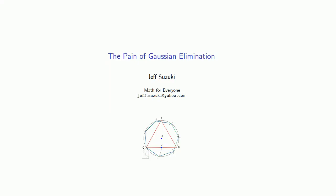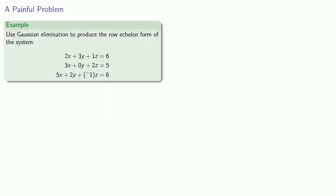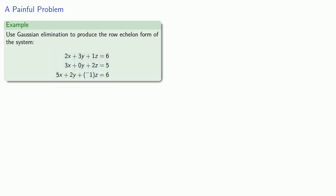One problem with Gaussian elimination is that we almost always encounter fractions. So let's start out with this system of equations, which is already written in standard form, which means we can put down our augmented coefficient matrix almost immediately.